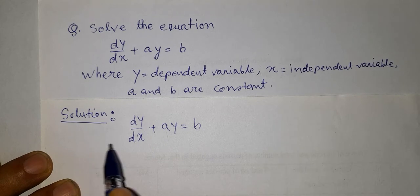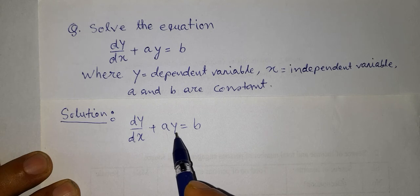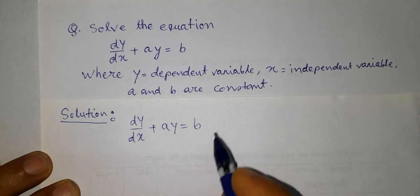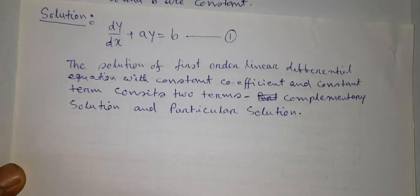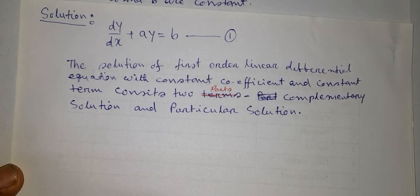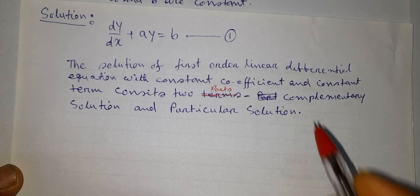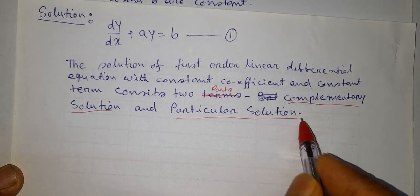Solution. Let us rewrite the equation: dy/dx + a·y = b. This is equation number 1. The solution of a first order linear differential equation with constant coefficient and constant term consists of two parts: the complementary solution and the particular solution.